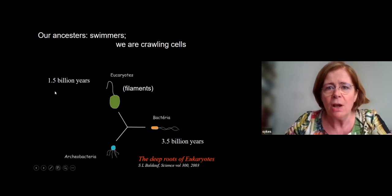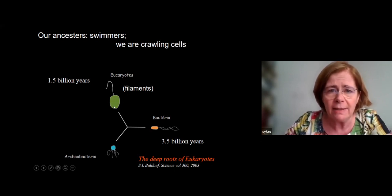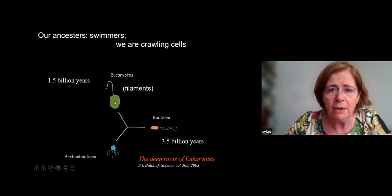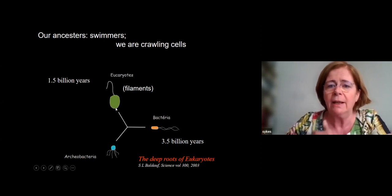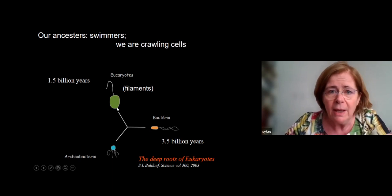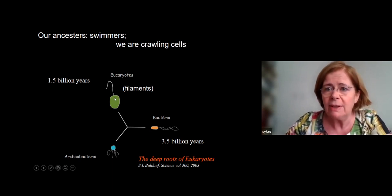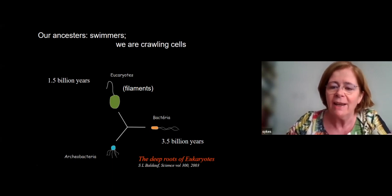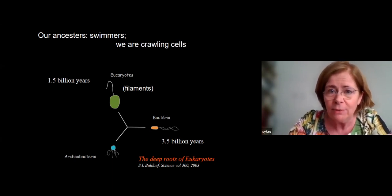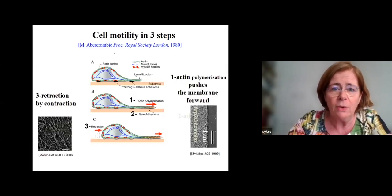This goes back a long time in evolution. Our ancestors were swimming cells. When eukaryotes appeared, there were these cells with a nucleus inside and a flagellum. But when these cells had to assemble to make an organism, all these flagella and motors needed to get inside and get organized so that the cell could still move, even within an organism.